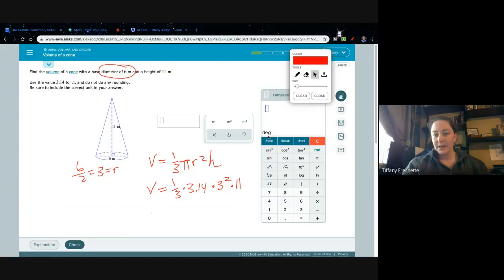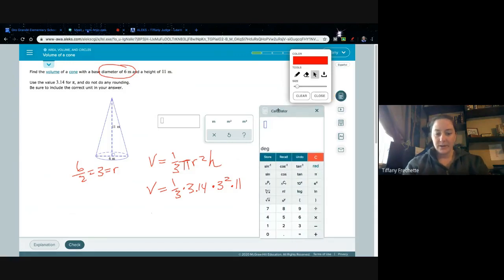All right. I'm going to go ahead and click on my calculator here. So I'm going to have 1 divided by 3. Whoops. It's not clicking there. And then I'm going to hit my over arrow. Times 3.14. Times 3. I'm going to hit my xy button. And then 2. Over arrow. Times 11. Equals.